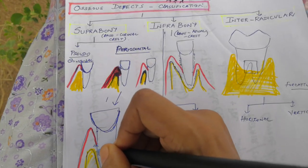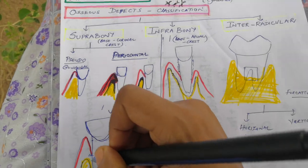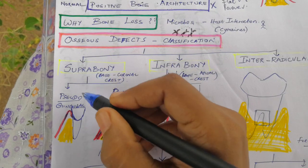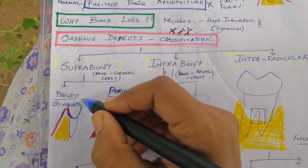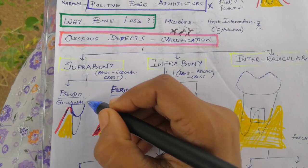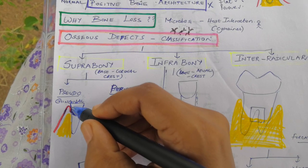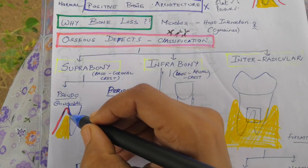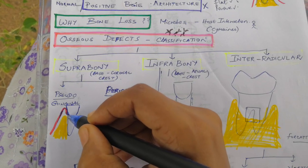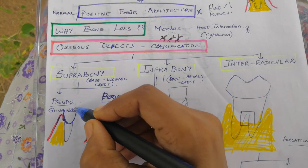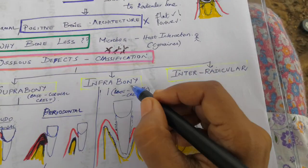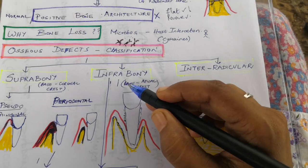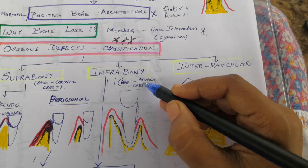In some cases, pocket depth exists but there is no periodontal destruction — these are pseudo or gingival pockets, such as in gingival enlargement. There is pocket depth but no attachment loss, so this is called a gingival pocket. In infra-bony defects, the base of the pocket is apical to the alveolar crest.